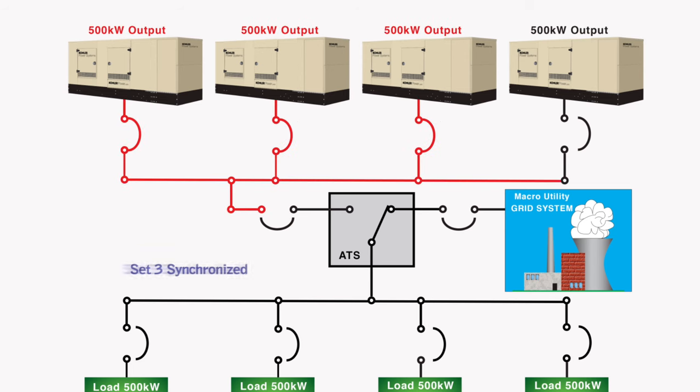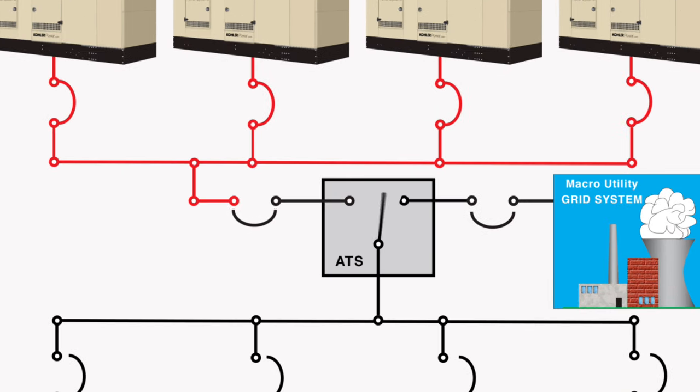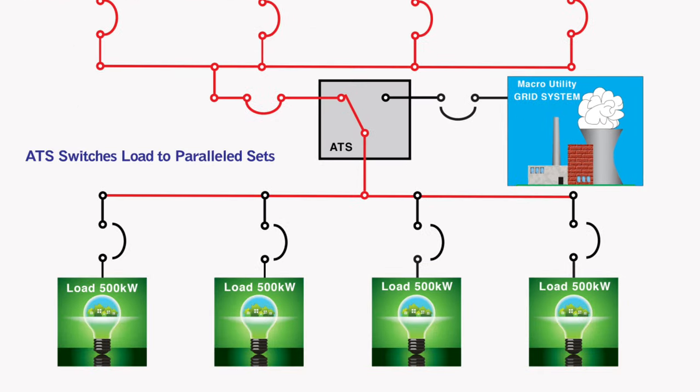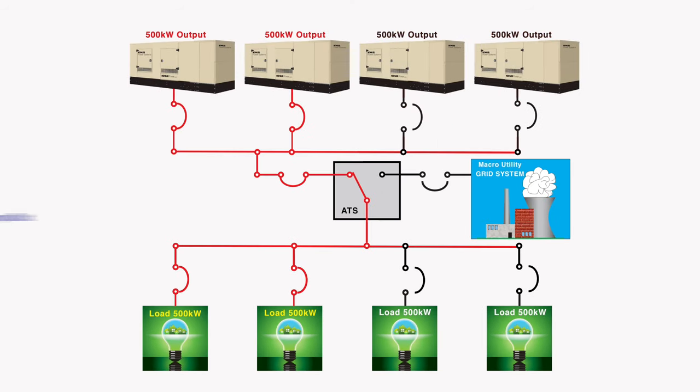The first set to start becomes the reference point for the other three sets to synchronize with. When all sets are synchronized and in parallel, they supply the load through the ATS. When only 50 percent of the load is applied, the breakers of two sets open and they are shut down.